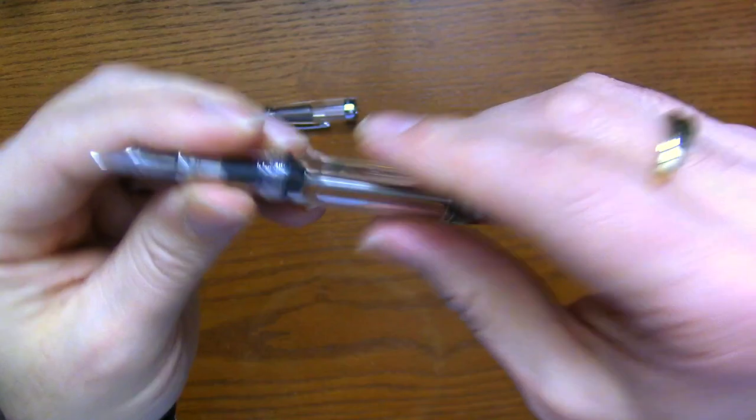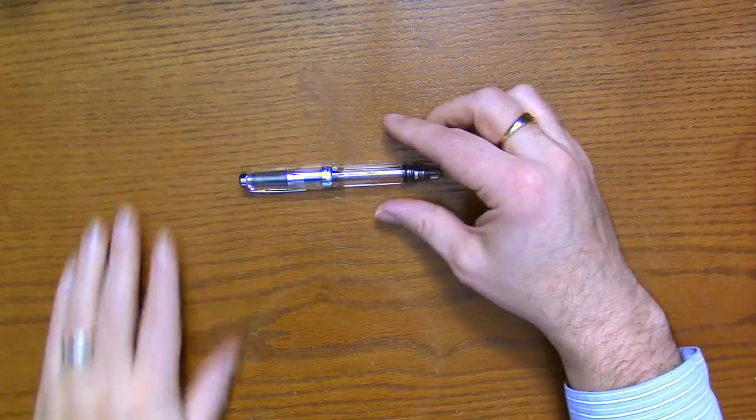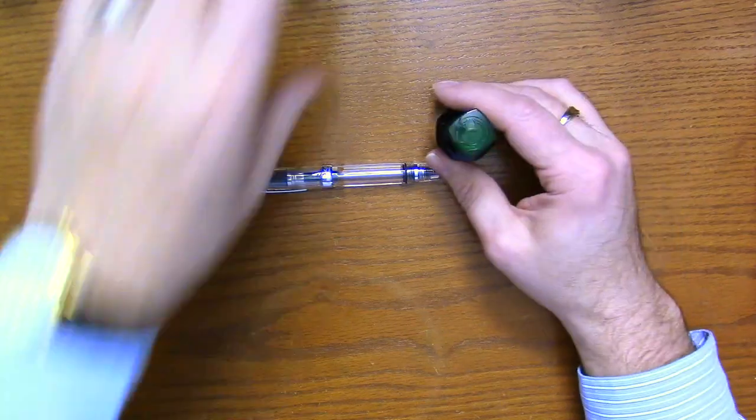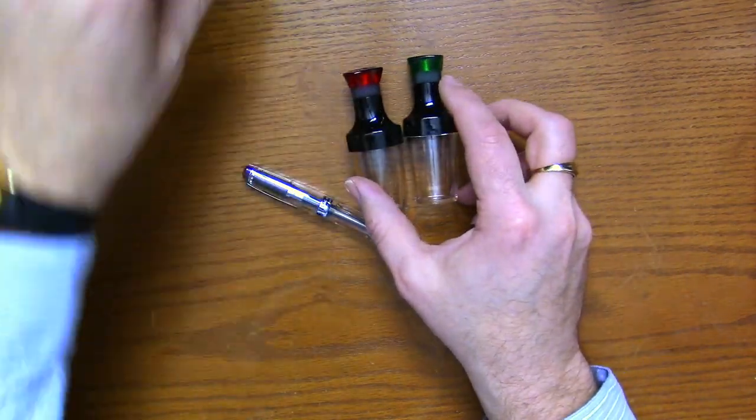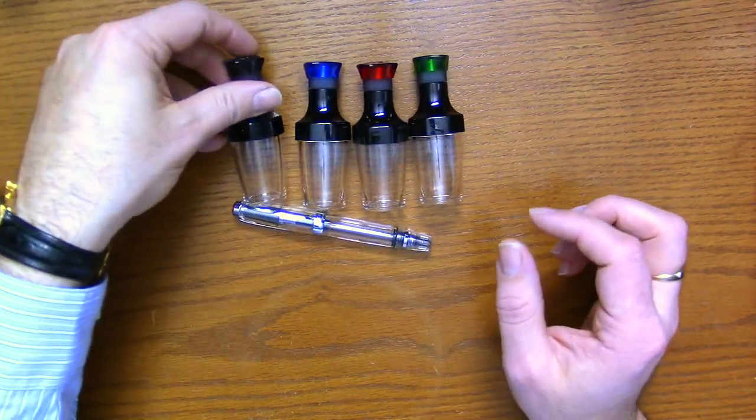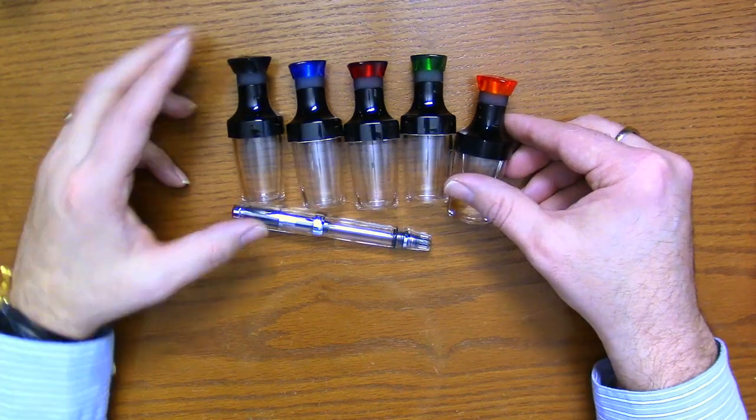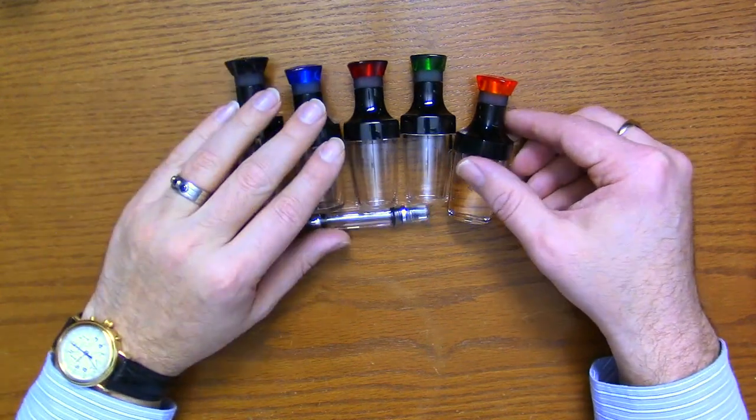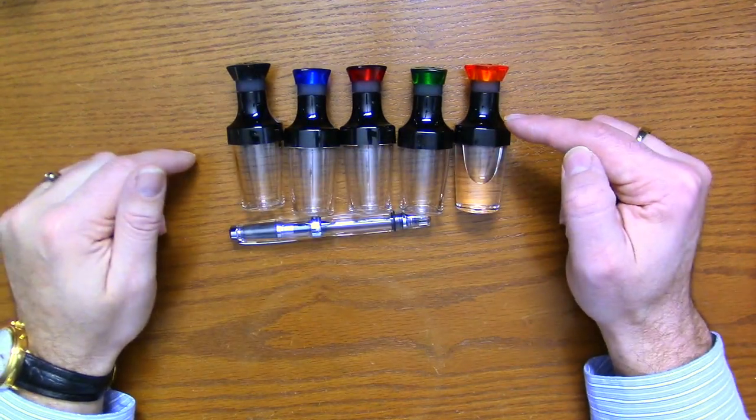Let's take a look at the bottle that goes with it, and then we'll do a filling. There are new bottles for the VAC Mini and they come in five different colors: black, blue, red, green, and orange.